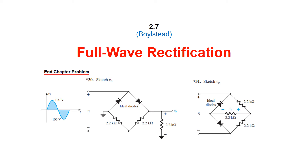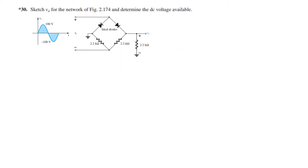Bismillahirrahmanirrahim. This video is about full wave rectifiers. We will be solving two end-chapter problems: problem number 30 and problem number 31, on the request of a student from Bangladesh. For question number 30, we need to sketch V0 for the network and determine the DC voltage available — so we have to sketch the voltage and find its DC equivalent.